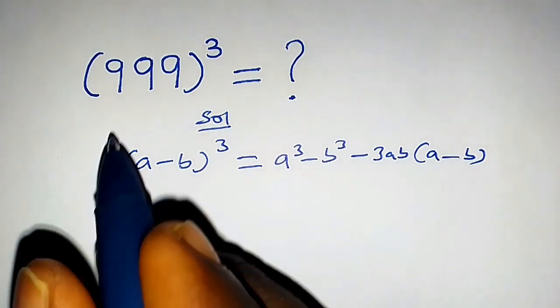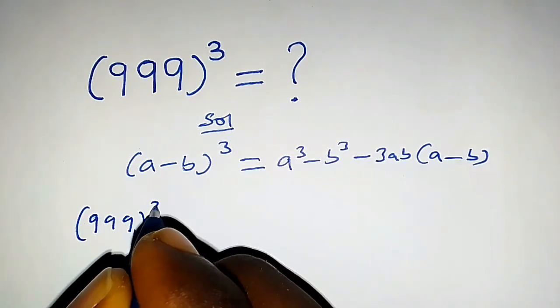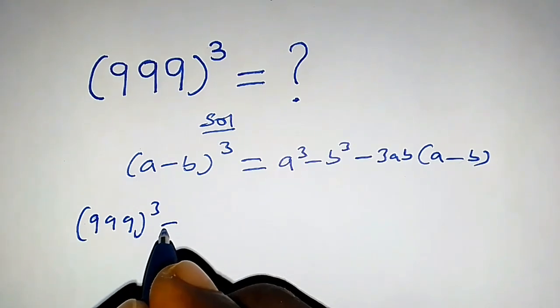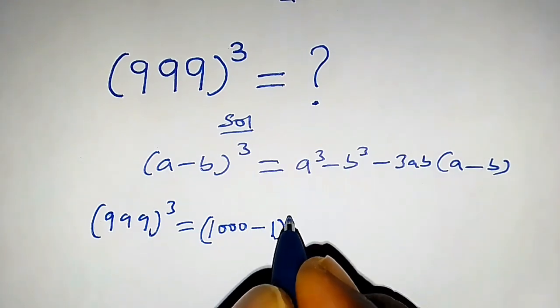So back to our question, we have 999 raised to the power 3. 999 could be written as 1000 minus 1, all cubed.